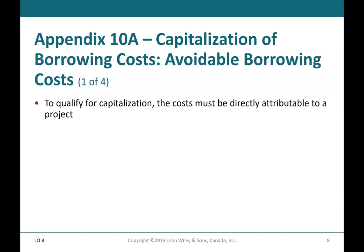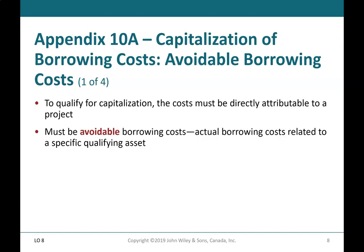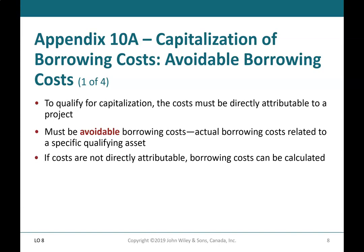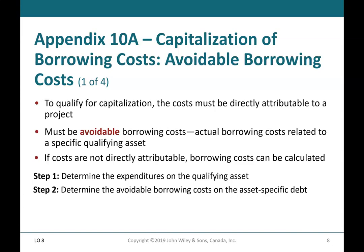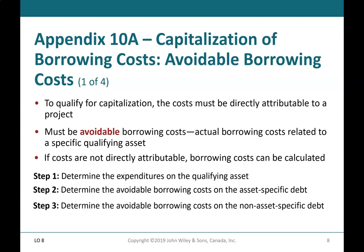Avoidable Borrowing Costs (1 of 4): To qualify for capitalization, the costs must be directly attributable to a project — they must be avoidable borrowing costs, meaning actual borrowing costs related to a specific qualifying asset. If costs are not directly attributable, borrowing costs can be calculated using four steps: Step 1 — determine the expenditures on the qualifying asset; Step 2 — determine the avoidable borrowing costs on the asset-specific debt; Step 3 — determine the avoidable borrowing costs on the non-asset-specific debt; Step 4 — determine the borrowing costs to capitalize.